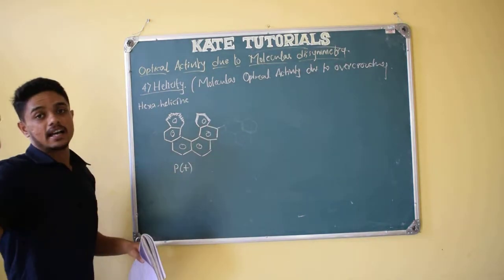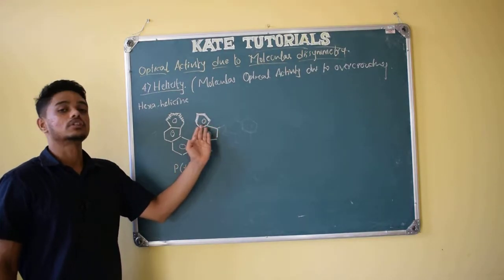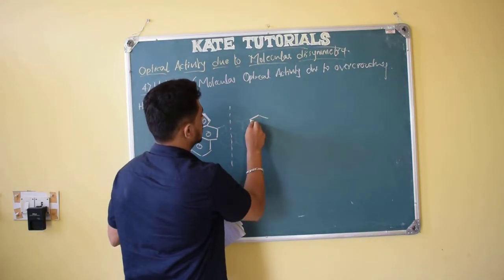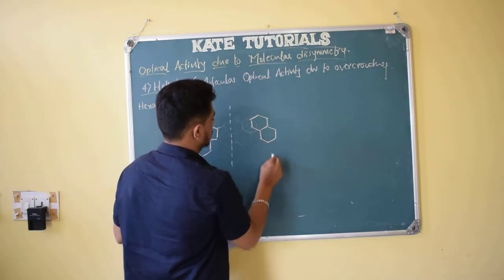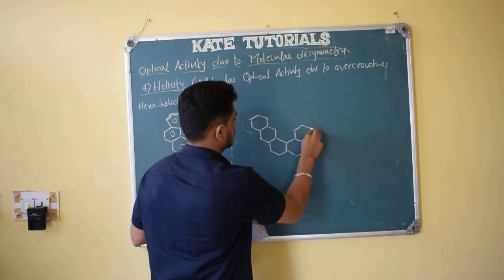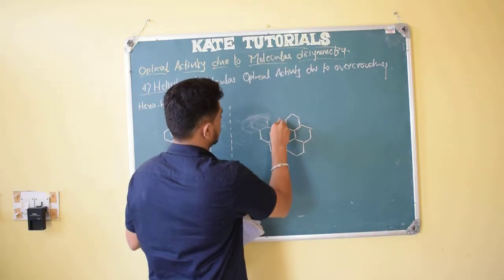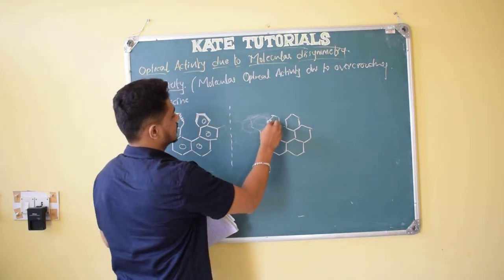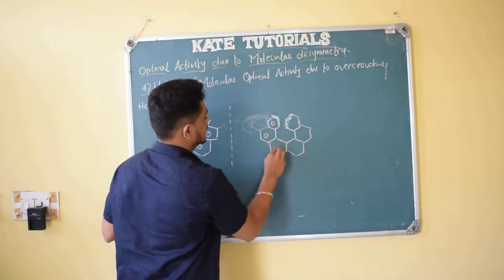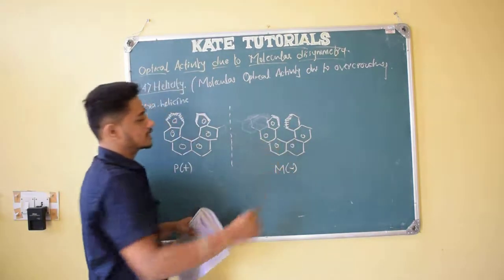The nomenclature here is P plus and M minus — analogous to R and S used for spiro compounds and biphenyls. If the right-handed end goes above it is P plus. Since the molecule is optically active it has a mirror image. The mirror image of hexahelicene has this end above and the other below. In the mirror image, the left-handed end is above and the right-handed end is below — this is M minus.